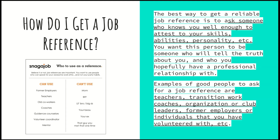Some examples of good people to ask for a job reference include former teachers. If you work in a transition environment, ask your transition work coaches. If you've ever been part of an organization or club on campus at your high school or community college, you can ask those people — they can attest to what qualities you brought to the organization and in what capacity you served as a member. You can also ask former employers or individuals you have volunteered with.